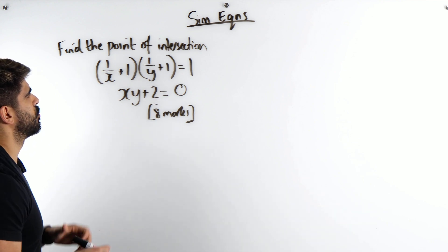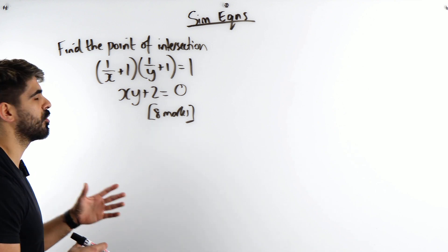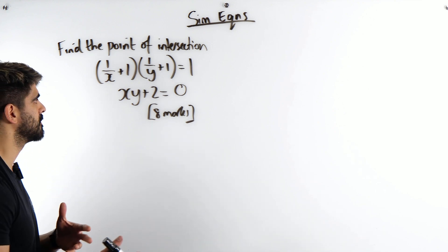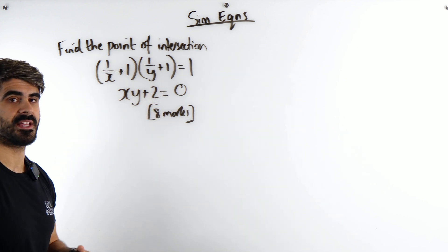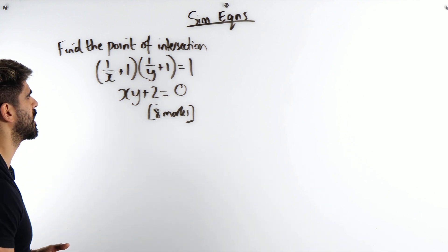So what some students do here when they see this is they're always trying to rearrange for either x or y. Yeah they say okay x is minus 2 over y, then they try and replace it here, just a complete mess. Okay, don't do that.